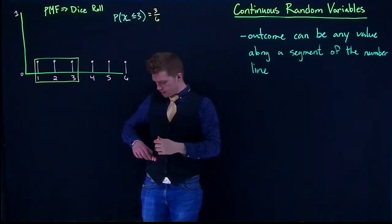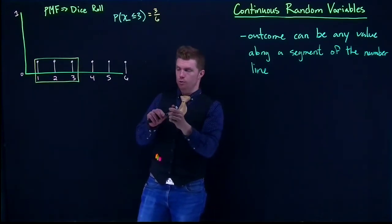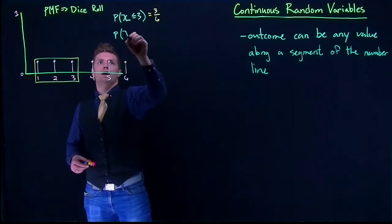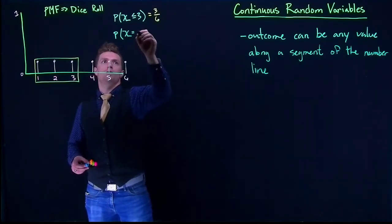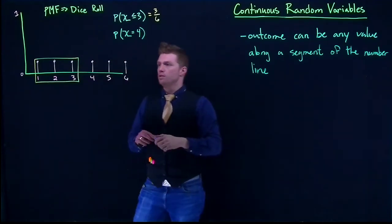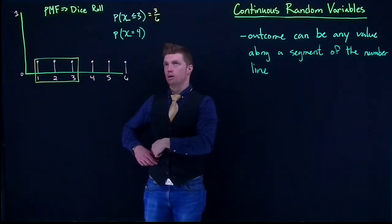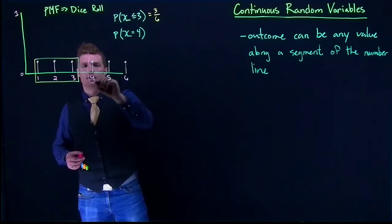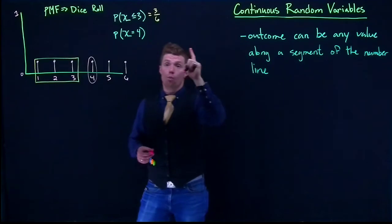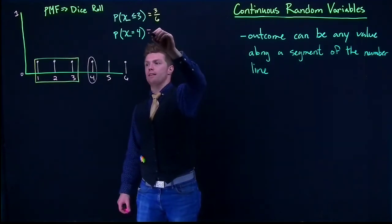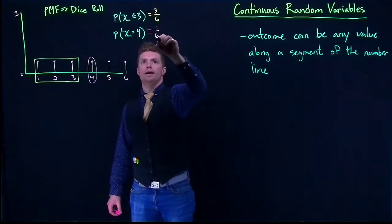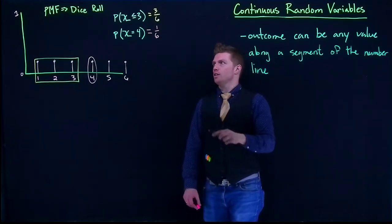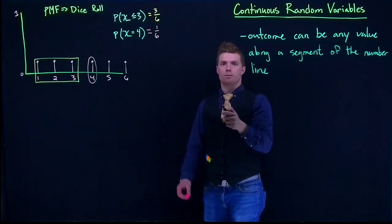Now, what's the probability that our dice roll equals exactly 4? All we have to do is circle that value. There's only one outcome we're interested in, so we tally it up and it's 1/6. Hopefully that's all review — just going back over our PMFs with discrete random variables.